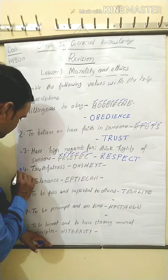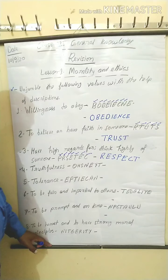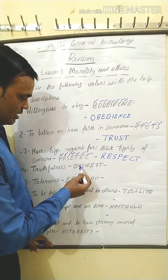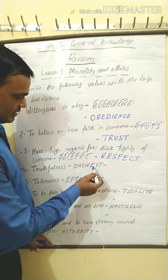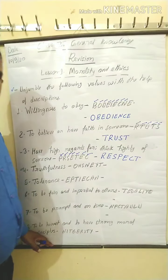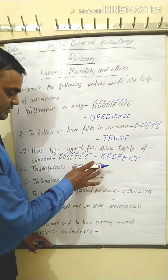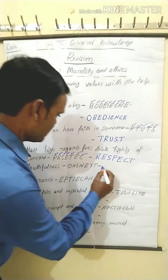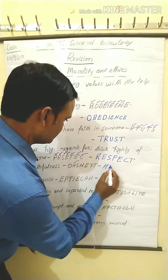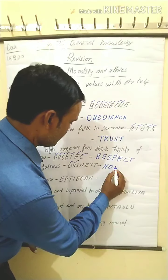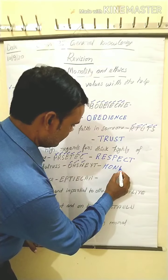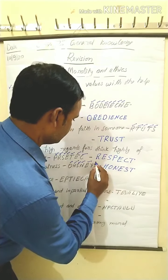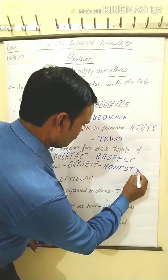Next, number four: truthfulness. The jumbled letters given are O-H-S-S-N-E-Y-T. The correct unjumbled word is Honesty.